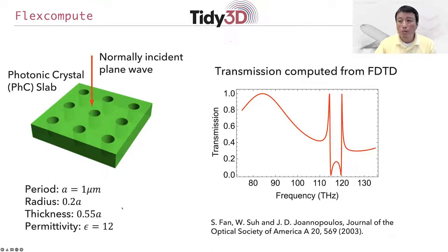We would be interested in computing the transmission spectrum of light normally incident upon the slab. On the right here is the computed transmission spectrum. The spectrum consists of a smoothly varying background with two resonant features near 115 and 120 terahertz, where the transmission varies very sharply from one to zero over narrow frequency ranges.